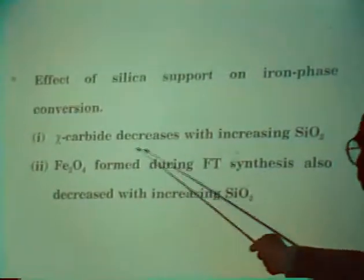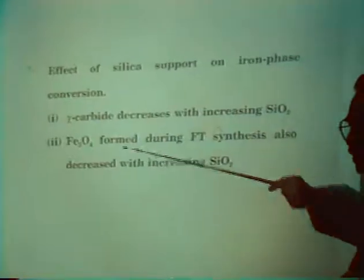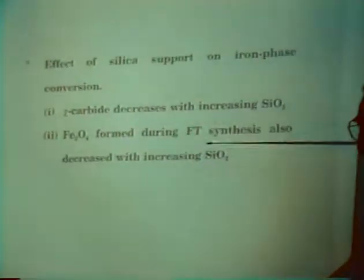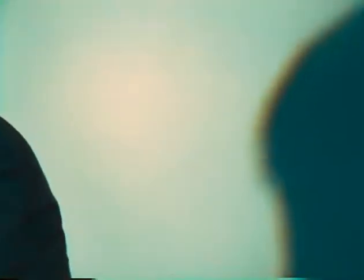The effect of silica support on iron phase conversion: chi-carbide decreases with increasing SiO2. Similarly, the chi-carbide also seems to decrease during FT synthesis with increasing SiO2 content. This work is supported by DOE. Thank you. Thank you.